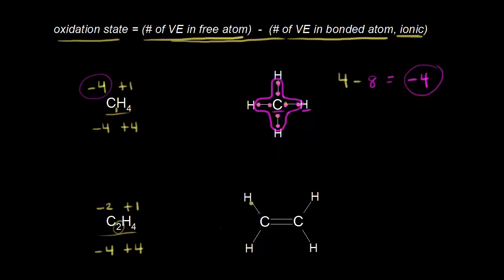Let's put in our bonding electrons and calculate the oxidation state of carbon using our formula. Let's pick the carbon on the right. Carbon is more electronegative than hydrogen, so carbon steals those electrons from each C–H bond. When we get to the double bond between the two carbons, we have four electrons. Comparing carbon to carbon, the electronegativity is the same, so we divide those four electrons equally — two electrons to each carbon.